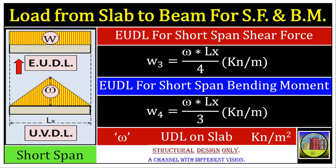The EUDL for bending moment is W equals omega × LX divided by 3, in kN per meter. Here, omega represents the total distributed load from the slab in kN per square meter, and LX is the short span of the slab. Using EUDL even for short spans maintains consistency in your overall analysis approach, which is helpful for engineers who regularly work with both short and long spans, reducing the need to switch between different calculation methods.